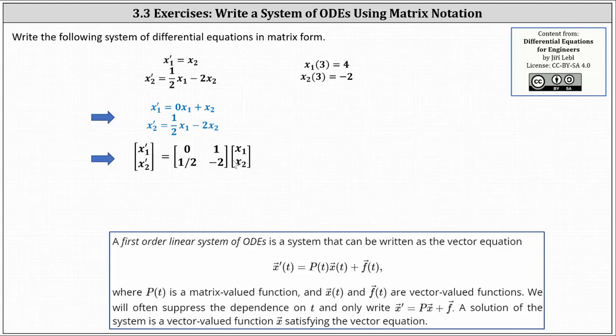And then we have times the vector-valued function x of t, which has components x one and x two. So now we do have the system of differential equations in matrix form.